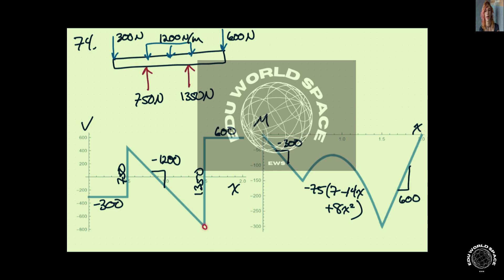And we should make sure that when we get to this point here, we know from going from the other way what this should be. So that's a good way to check to make sure that we actually get back up here to 600 newtons.